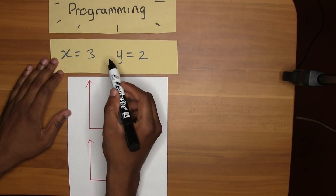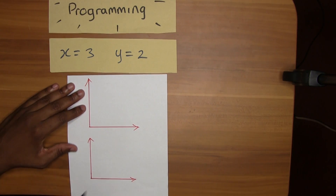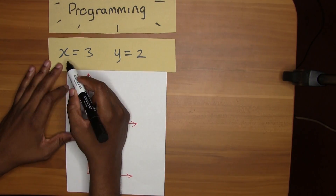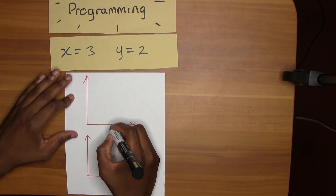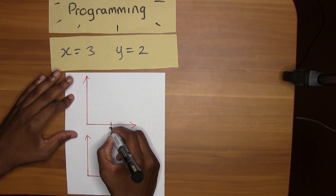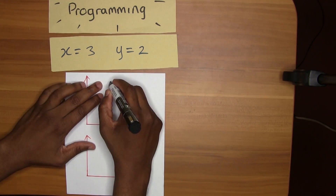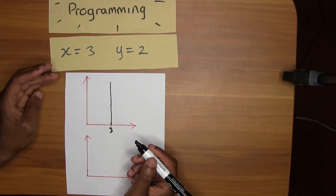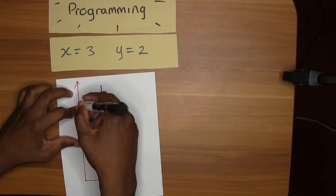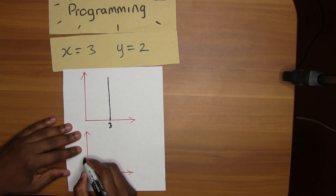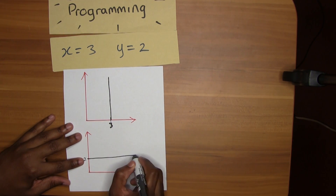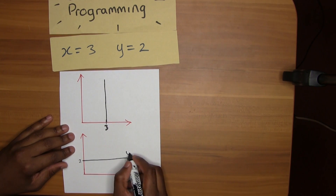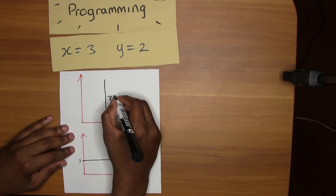The final popular line type is where x equals 3 or y equals 2 — x or y equal to some number. The line x equals 3 would look like this: find 3 on the x-axis and draw a vertical line straight up from that point. If y equals 2, find 2 on the y-axis and draw a horizontal line straight across. That's it.